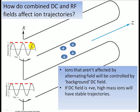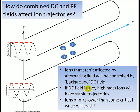They will be controlled largely by the background field, the background DC field, which has the effect of stabilizing their trajectory. High mass ions will have stable trajectories, but if the mass of the ion is too low, lower than some critical value of mass charge ratio, the ions will crash.